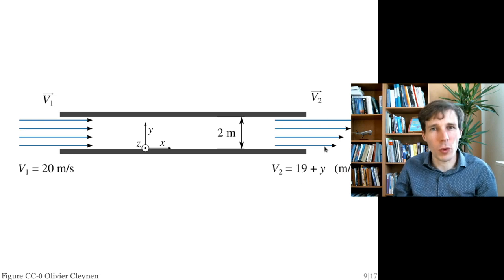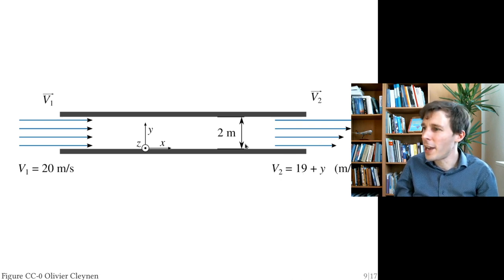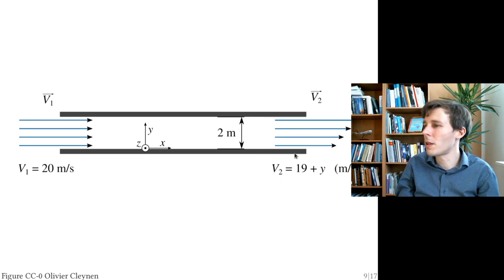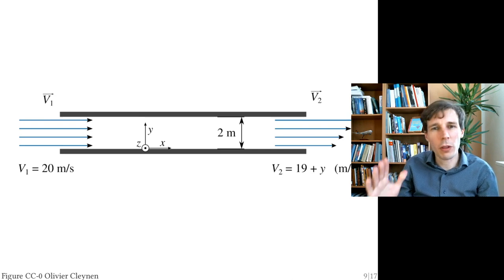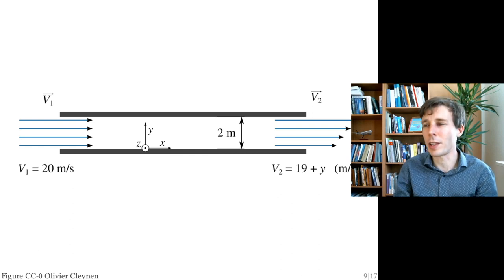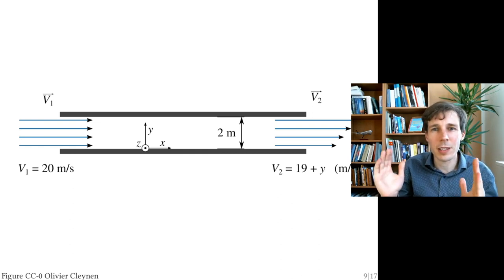At the outlet the flow also has 20 meters per second on average, but the velocity distribution is changed. Part of it has only 19 m/s, and as y increases toward y equals 2, the velocity increases up to 21 m/s, so on average you still have 20 m/s but the distribution is changed.